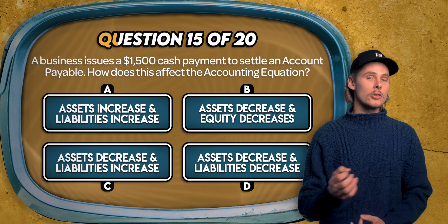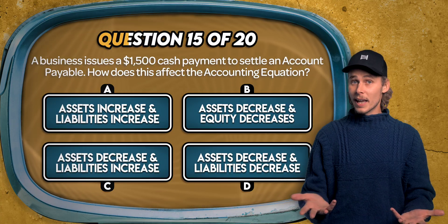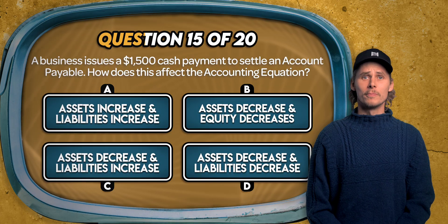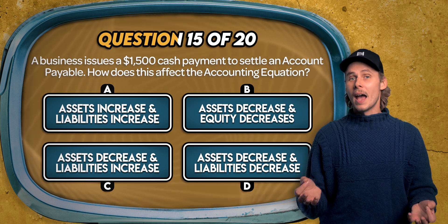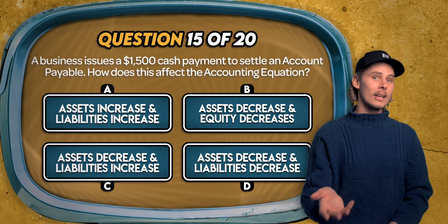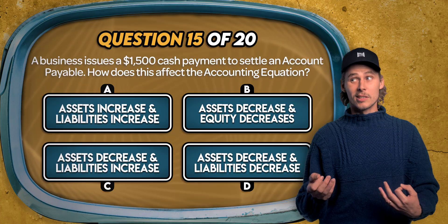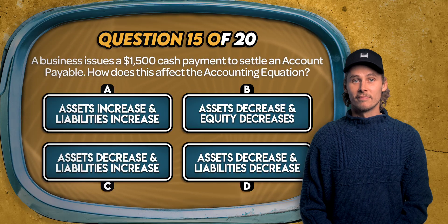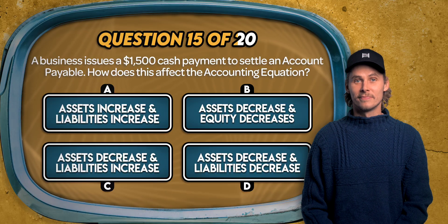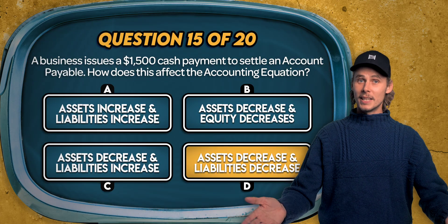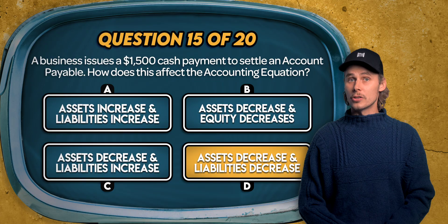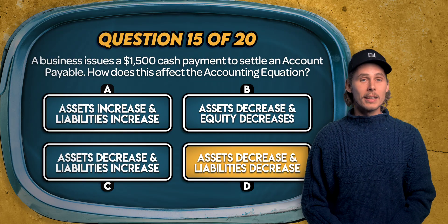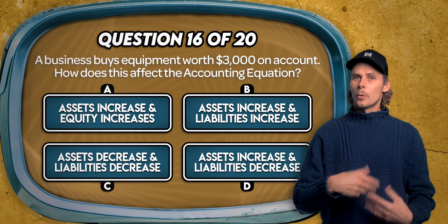Question 15. A business issues a $1,500 cash payment to settle an account payable. How does this affect the accounting equation? Assets increase and liabilities increase? Assets decrease and equity decreases? Assets decrease and liabilities increase? Or assets decrease and liabilities decrease? The answer is D. Paying off an account payable reduces cash, which is an asset, by $1,500. It also reduces the outstanding liability by $1,500.